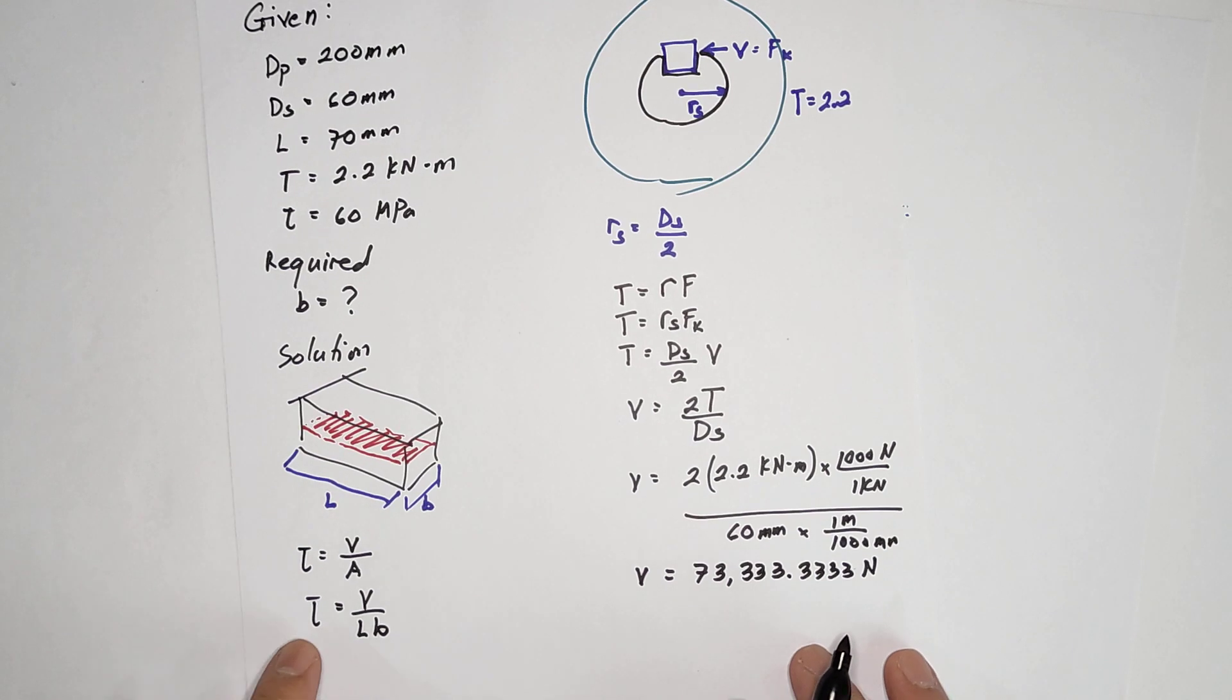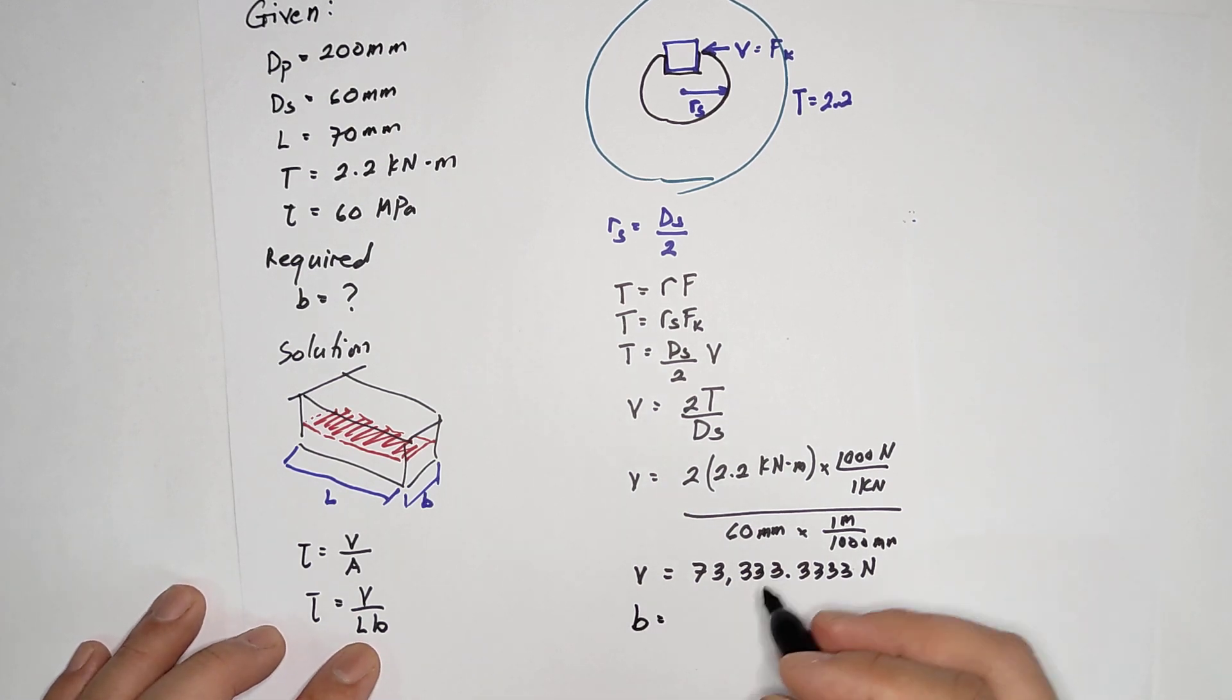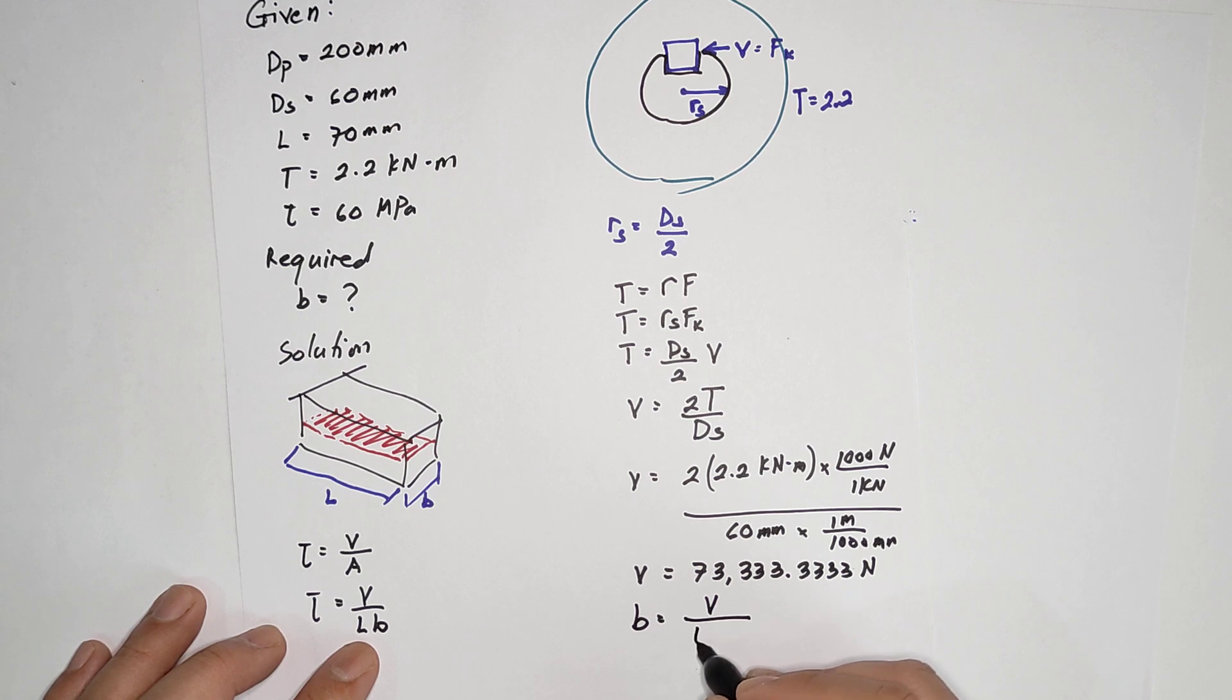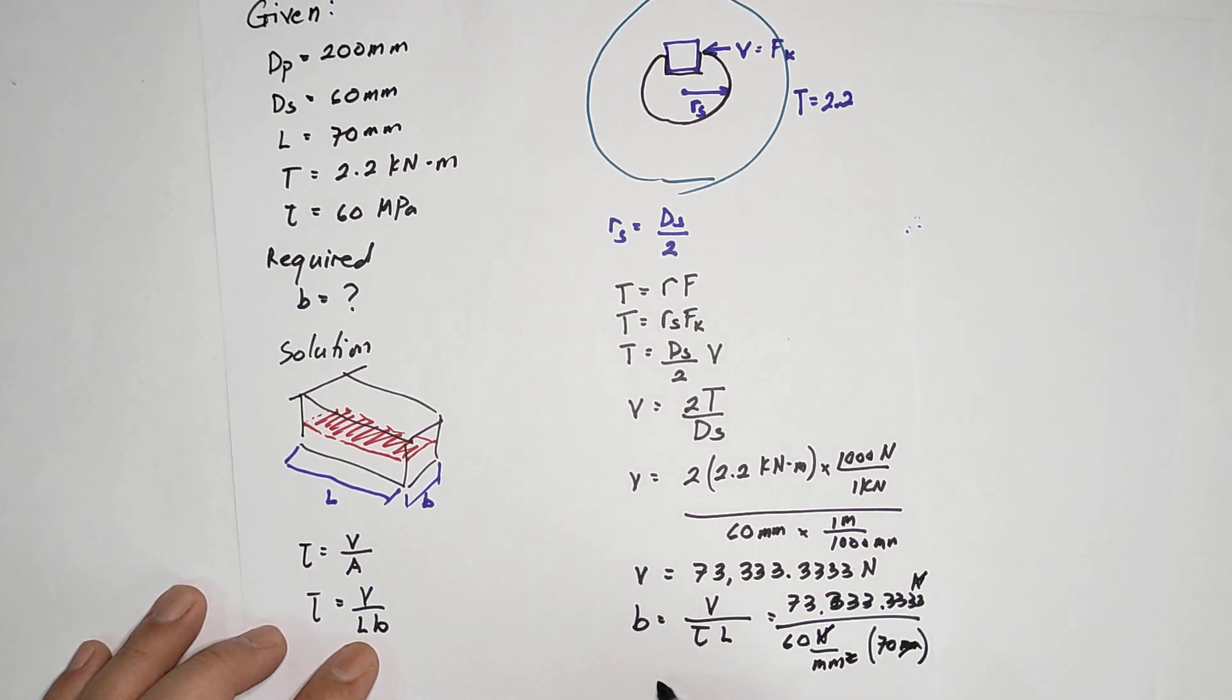Now going back to this equation, if you have the shear force, you can now compute for B. The B is actually shear force over shear stress times the length. The shear force is 73333.3333 newton, and this one is 60 newton per mm squared, multiply by the length of 70 mm. The unit newton here will cancel, so you now have millimeter. It's 17.4603 mm.